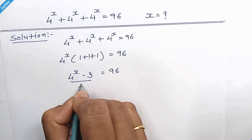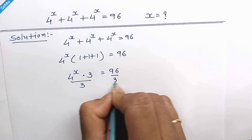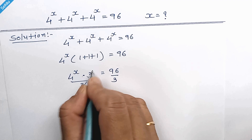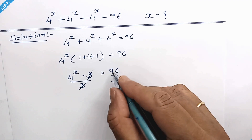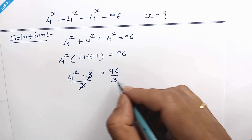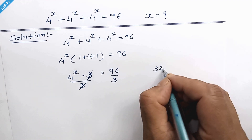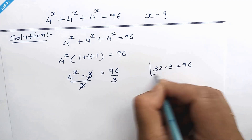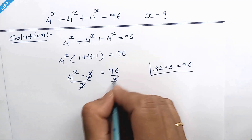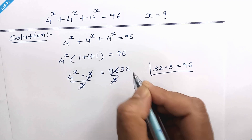Divide by 3 on both sides. The 3s get cancelled out. And what is 96 over 3? 32 times 3 is 96, so here we have 32.